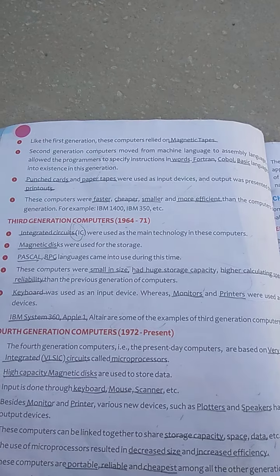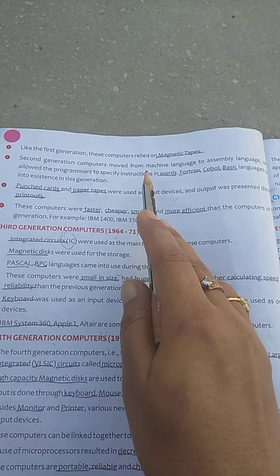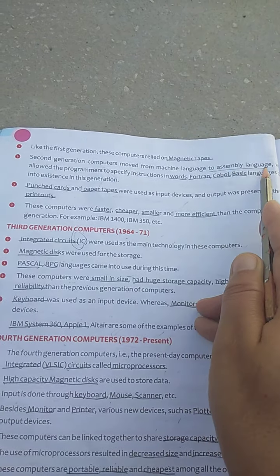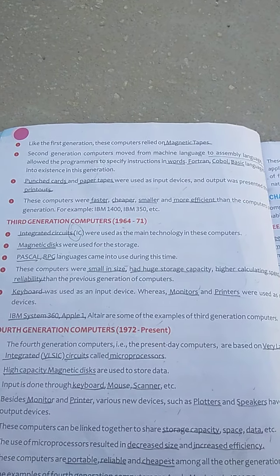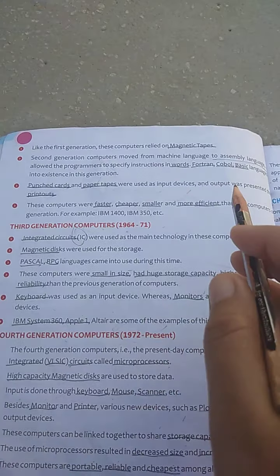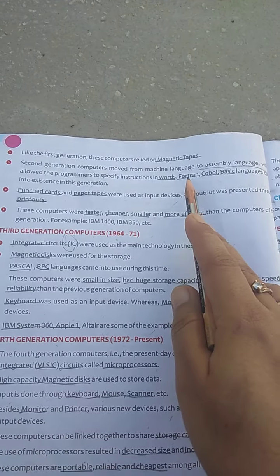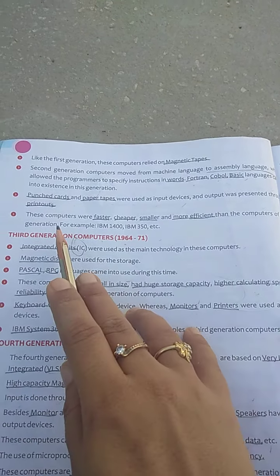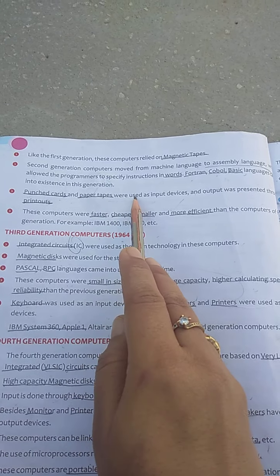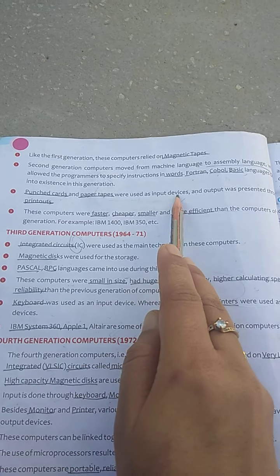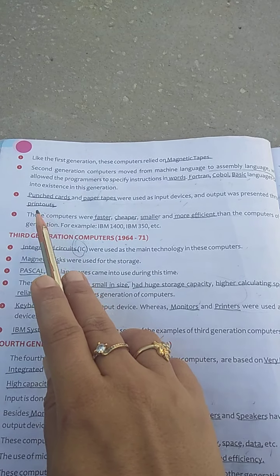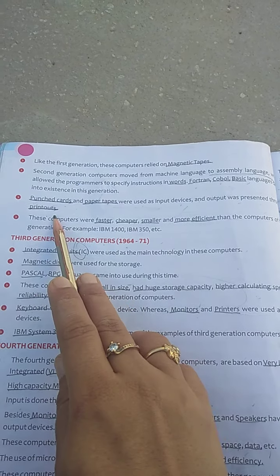Second generation computers moved away from machine language. In these computers, assembly language was used. Assembly language is similar to our English language, and examples of assembly language include Fortran, COBOL, Basic, etc. Punch cards and paper tapes were used as input devices, and output was given through printouts.